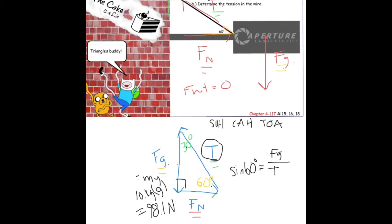I need to rearrange these equations, so multiply by T so it's at the top on this side, and then divide by the sine of 60 so it's at the bottom of this side. So I have tension equals the force of gravity divided by the sine of 60 degrees.